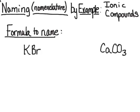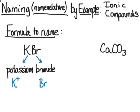Let's get started with some examples, going first from formula to name. We have KBr and CaCO3. The name of the first compound is potassium bromide. I looked at the compound and could see it's composed of a cation and an anion. The cation is potassium — K represents potassium on the periodic table. Bromide is the name for the anion formed from bromine: I take the base name and add '-ide' to indicate it's the anion. So we have potassium bromide.